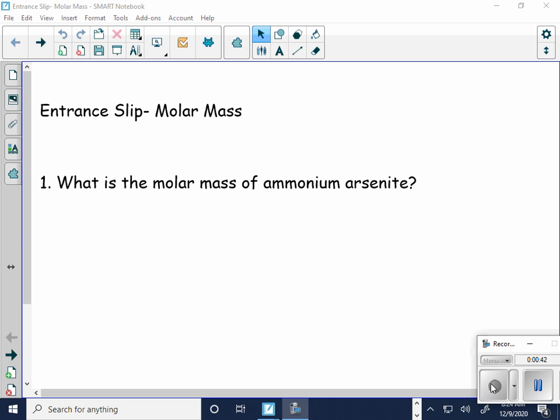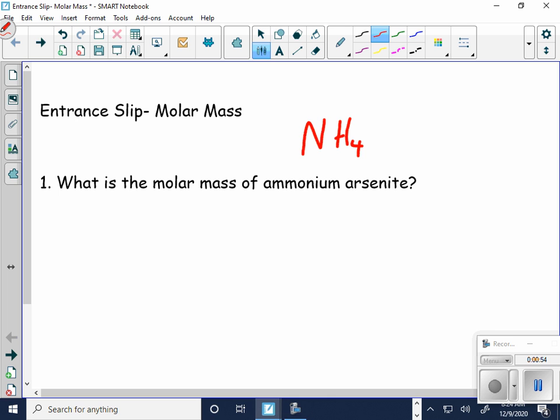Probably the biggest problem I see is naming. I look at this and I say, okay, I have ammonium. Ammonium is NH4 and it's 1+. Now, I don't have arsenite memorized, so I look at my polyatomic ion sheet and arsenite is AsO3 and it's 3-.